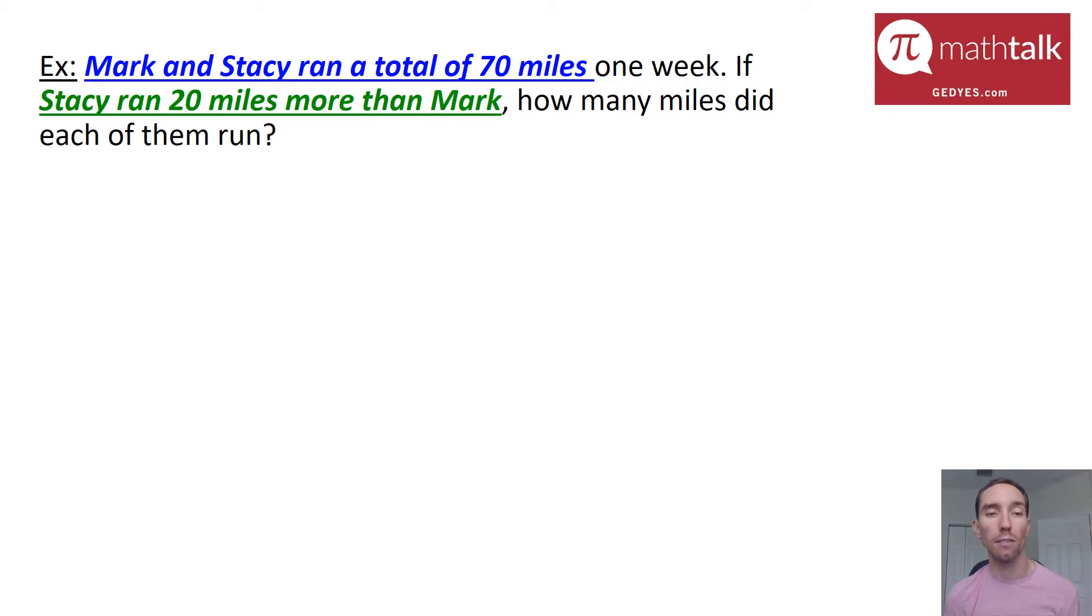Mark and Stacy ran a total of 70 miles and Stacy ran 20 miles more than Mark. So I'm going to use letters to represent the different people here, M for Mark, S for Stacy. And when I do that, I get the two equations. Mark and Stacy ran a total of 70 miles, which is just M plus S equals 70. And then Stacy ran 20 miles more than Mark. So Stacy equals Mark's mileage plus an additional 20.